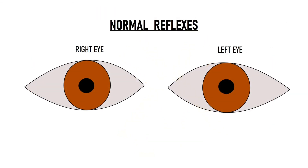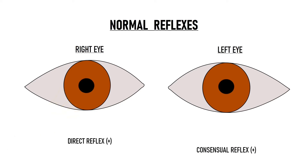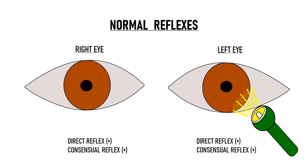Now let's see what happens in different nerve lesions, but first, what happens in a normal case when the afferent and efferent pathways in both eyes are intact? When we shine light in the right eye, direct light reflex is seen in the right eye and consensual light reflex is seen in the left eye. When we shine light in the left eye, direct light reflex is seen in the left eye and consensual light reflex is seen in the right eye.